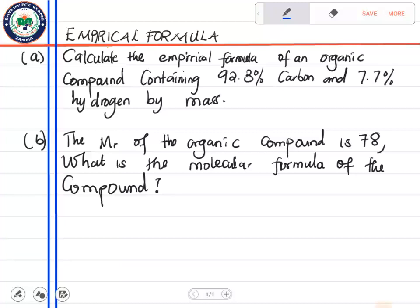Now we are going to look at how we can find the empirical formula and how we can find the molecular formula of a compound. Calculate the empirical formula of an organic compound containing 92.3% carbon and 7.7% hydrogen by mass.